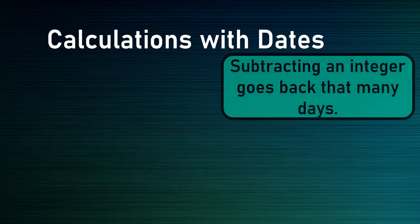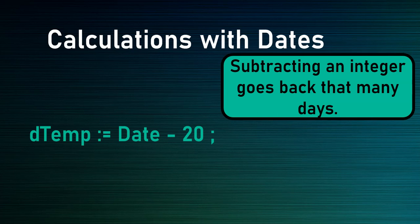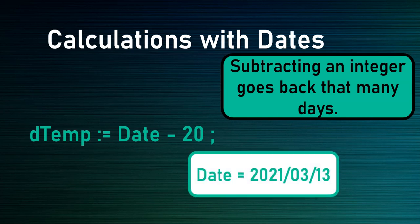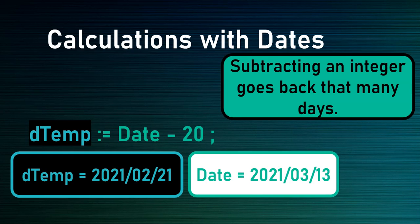The same can be done if you subtract an integer — it just goes back that many days. So if I take today's date and minus 20, and we're pretending that was the 13th of March, we can't go back past the 13th into negative days. Delphi will work out 13 days back and then 7 days into the previous month, which would be February. So the answer stored in dtemp would be the 21st of February.